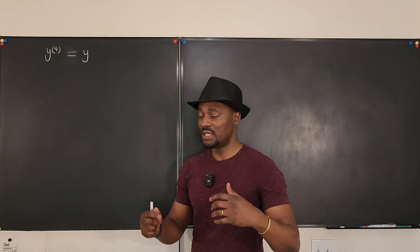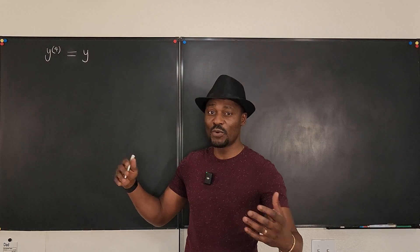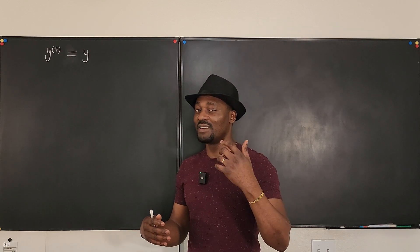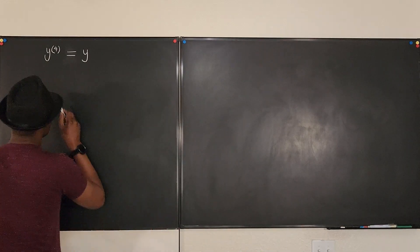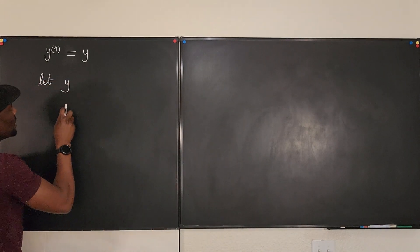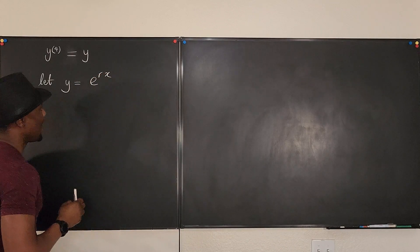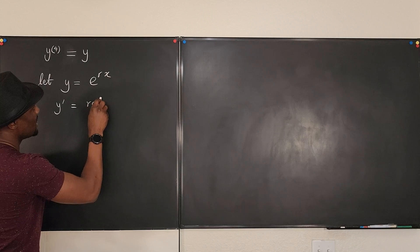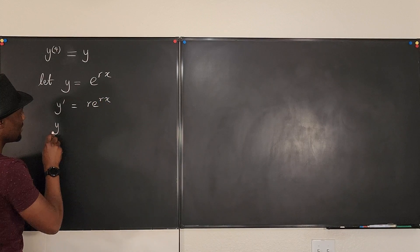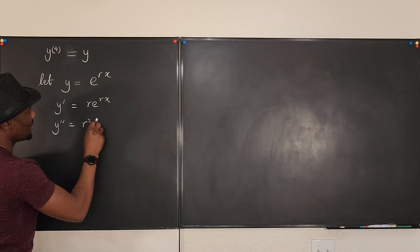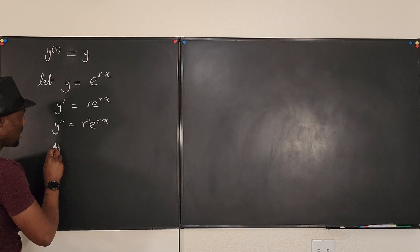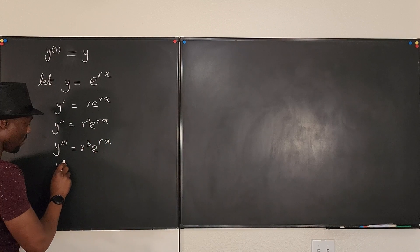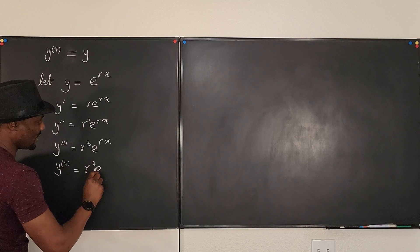So our first approach would be to make that assumption we always make that for a function to have a very smooth interaction with its derivative, it has to be some kind of exponential function. So we're going to say that y, let this function we're talking about be e to the rx. And then we can say that the first derivative is r e to the rx. The second derivative is r squared e to the rx. If we differentiate this one more time, will be r to the third e to the rx. And then we have to do that one more time. It's going to be r to the fourth e to the rx.